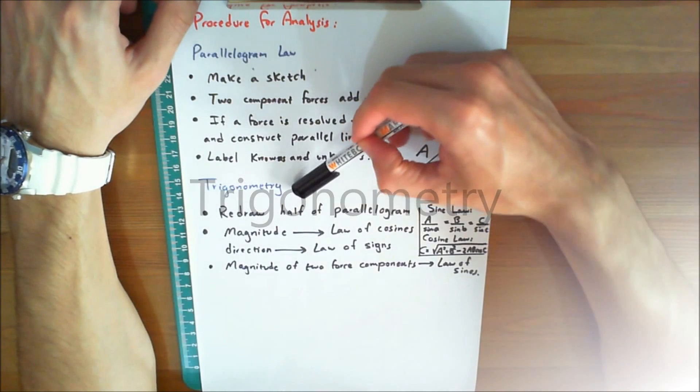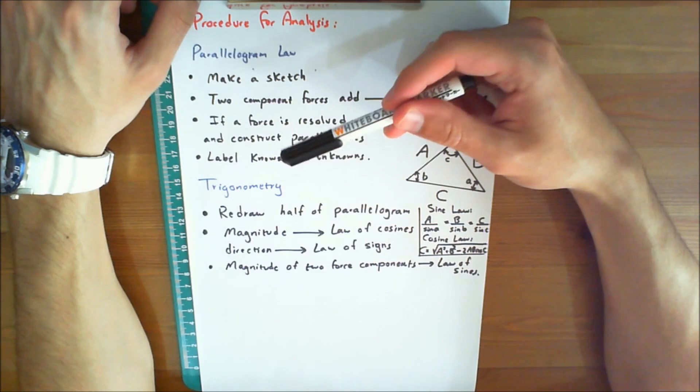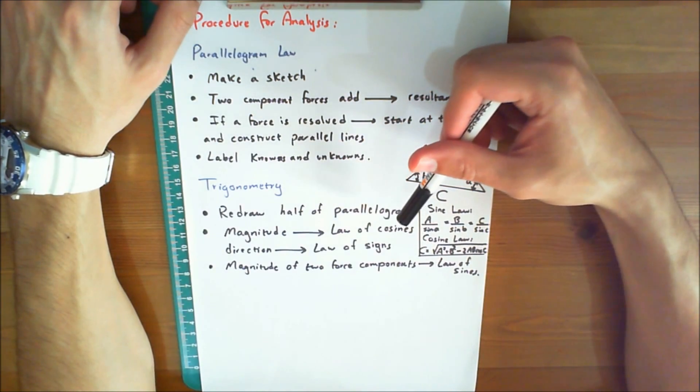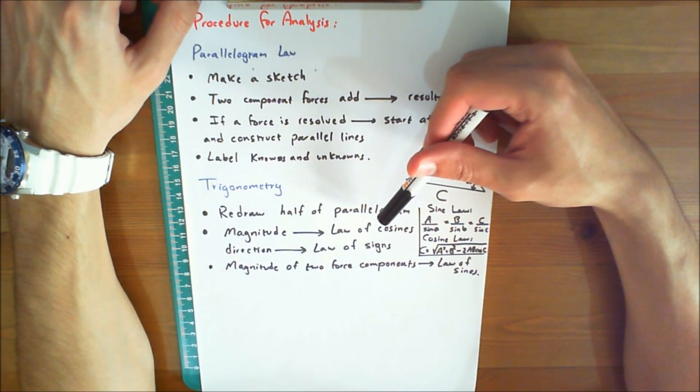Now let's discuss trigonometry. First, redraw a half portion of the parallelogram to illustrate the triangular head-to-tail addition of the components.